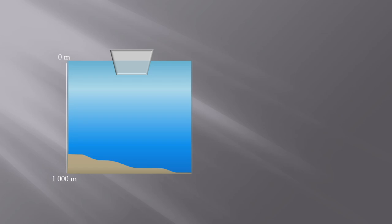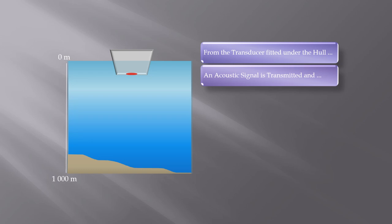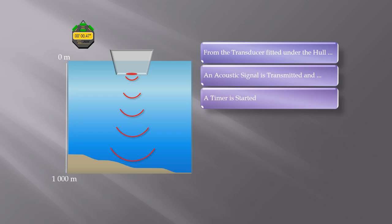Let me show you how. Here you will see that a sound pulse will be sent from the transducer of the echo sounder located at the bottom of the ship's hull, or ship's keel rather. From the transducer, a sound signal or acoustic signal is transmitted and a timer is started.